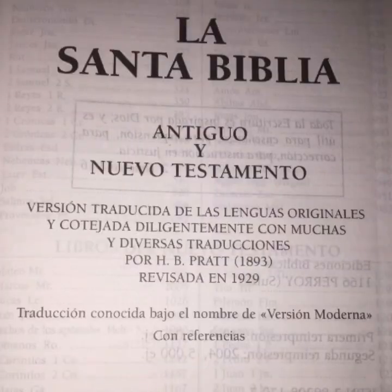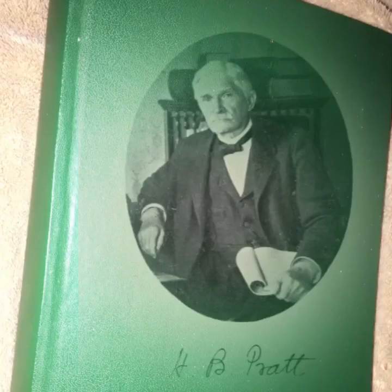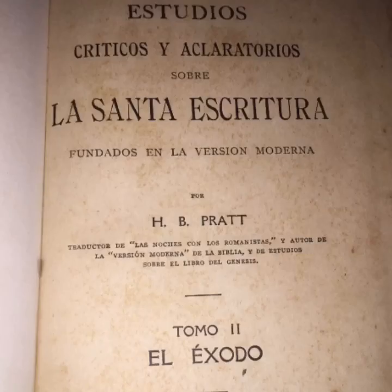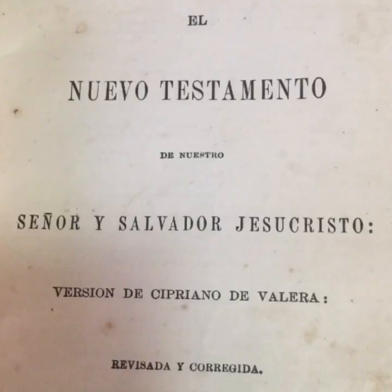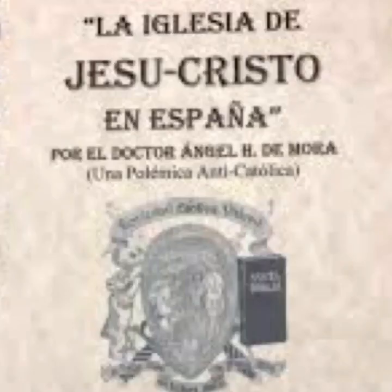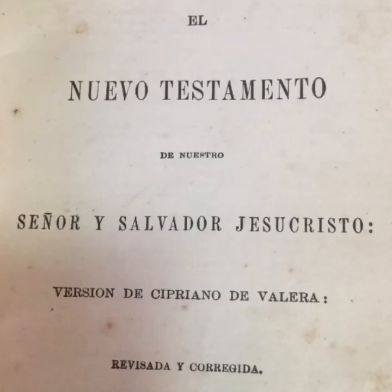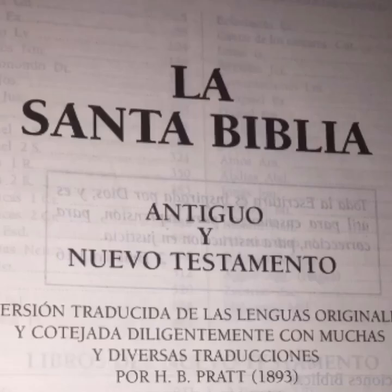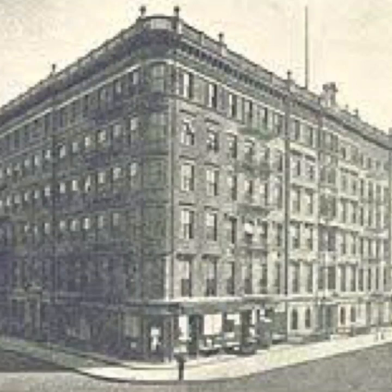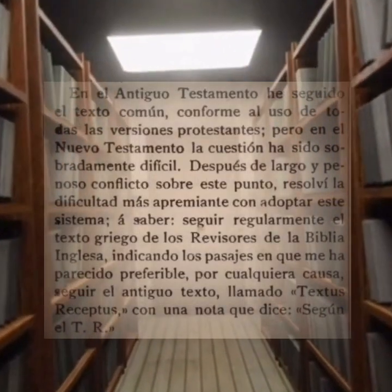En este vídeo hablaré de la versión moderna, también de una obra de erudición que defiende el uso de la forma Jehová, a pesar de que muchos prefieran la forma Yahvé. Henry Barrington Pratt, de religión presbiteriana, fue el primer misionero protestante en llegar a Colombia en 1856. La versión Valera de 1865 fue el resultado del trabajo del español Ángel Herreros de Mora y el erudito Pratt. Esta revisión se le llama la Biblia sin apócrifa. Este eminente erudito y misionero fue el traductor de la Biblia al español llamada Versión Moderna, publicada completa en 1893 con el apoyo de la Sociedad Bíblica Americana.